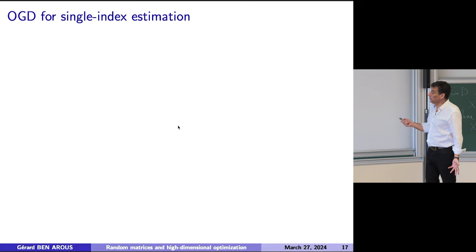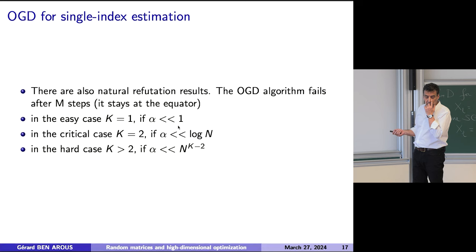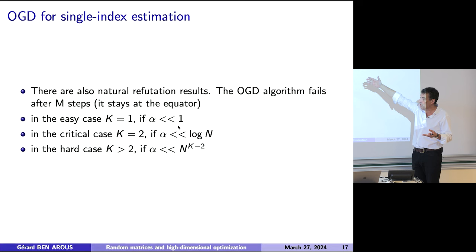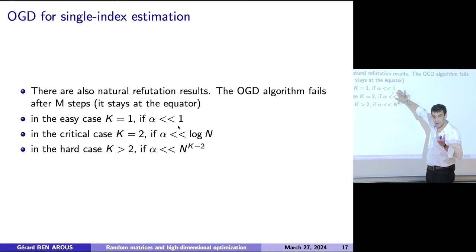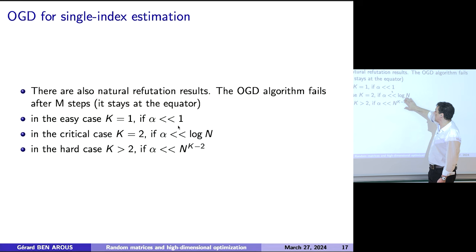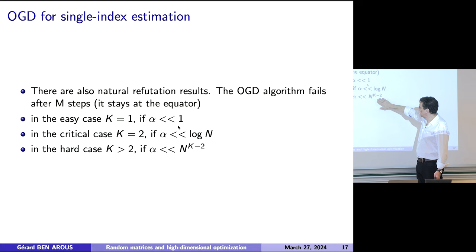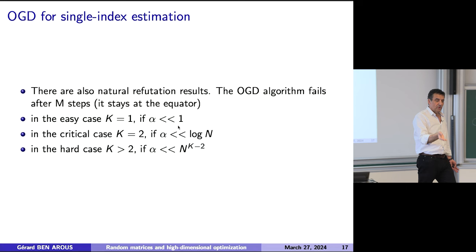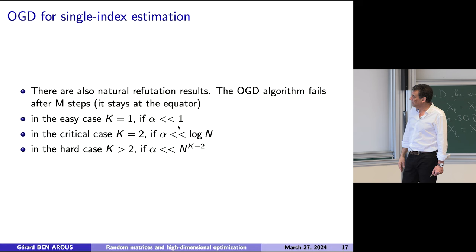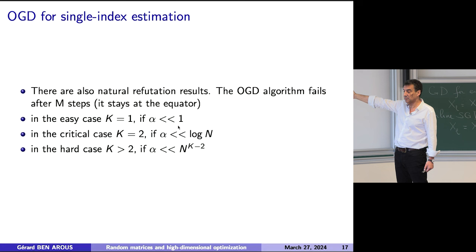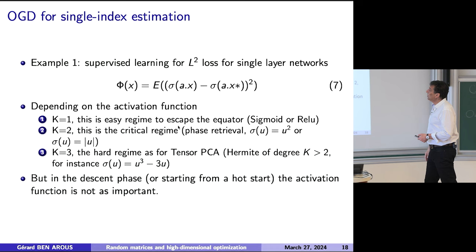That's what we mentioned yesterday — those were the positive results. You also have negative results, which are refutation results. The OGD fails after n steps, meaning it stays at the equator. In the easy case when k=1, if alpha is much less than 1 — if you have much less data than dimension. In the case k=2, if m is smaller than log(n) times n. We have a little gap between the refutation and the positive result. And when it's much smaller than n^(k-2), it doesn't work. So essentially I give you complete results — either it works or it doesn't.